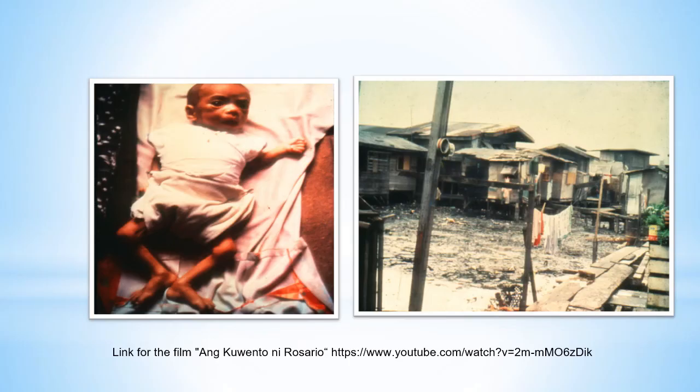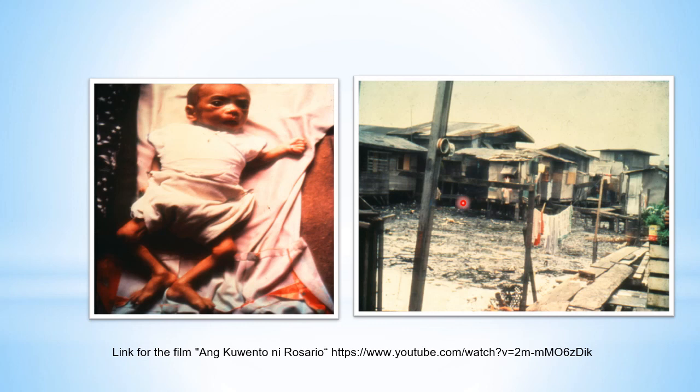Do you recognize these health images? Are these pictures familiar to you? This is Rosario and this is Barangay Tanyo. What could have been done to prevent Rosario's demise? And what can we do to prevent a similar scenario from happening?